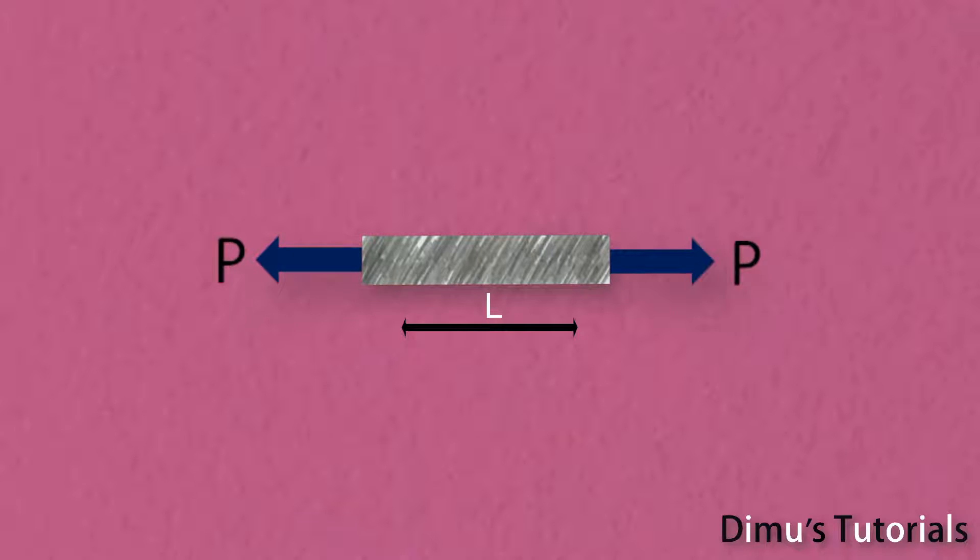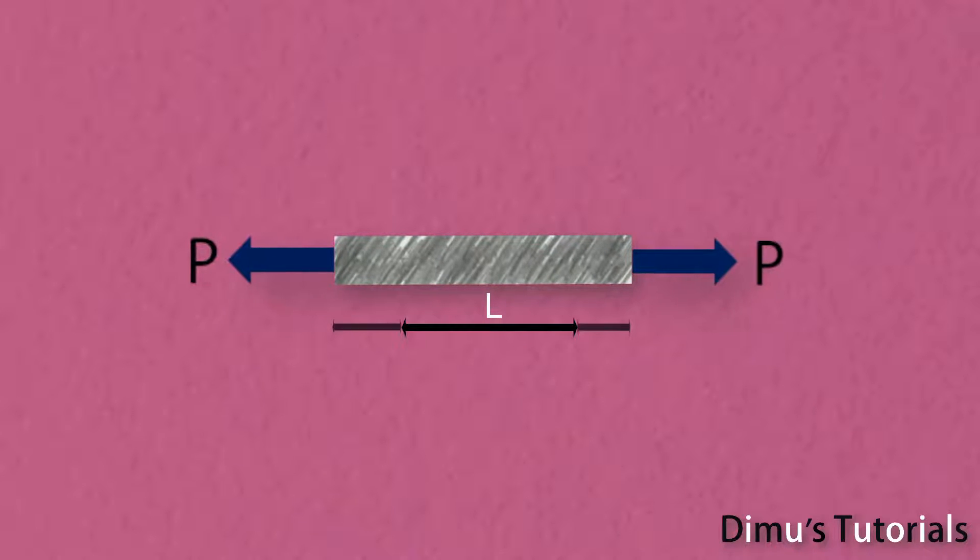The specimen will regain its original length when the force is removed. Up to a specific limit of tensile force, the specimen is able to regain its original length. This is called elastic limit and the deformation is called elastic deformation.